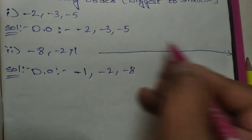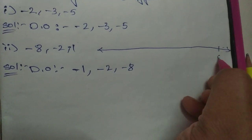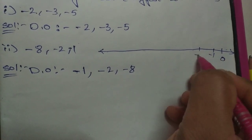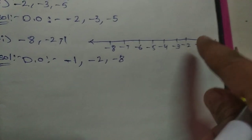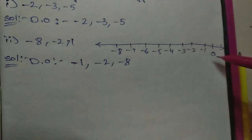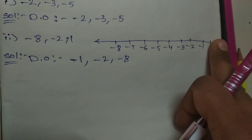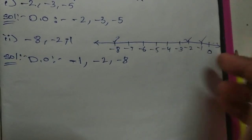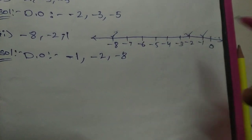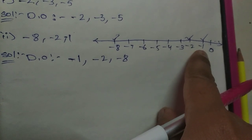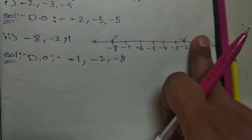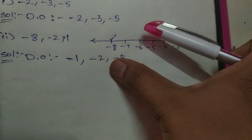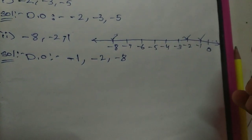Suppose you draw a number line — I am showing again. I am taking only negative integers here: minus one, minus two, and so on. Check which one is the biggest: minus eight, minus two, minus one. Which one is the furthest to the right? Minus one. So minus one is the biggest. Then compare minus eight and minus two — minus two is to the right, so minus two is next, and minus eight is the smallest.